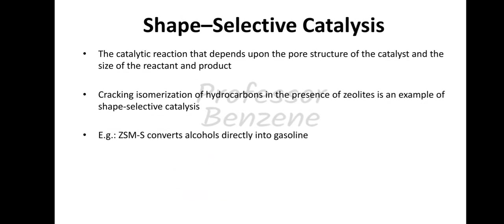What is a shape-selective catalyst? A shape-selective catalyst is one whose catalytic reaction depends upon the pore structure of the catalyst and the size of the reactant and product molecules. The pore size on the surface of the catalyst determines which molecules can react.